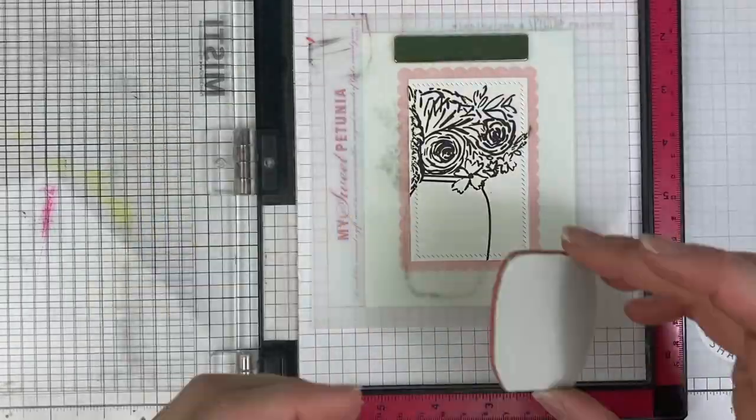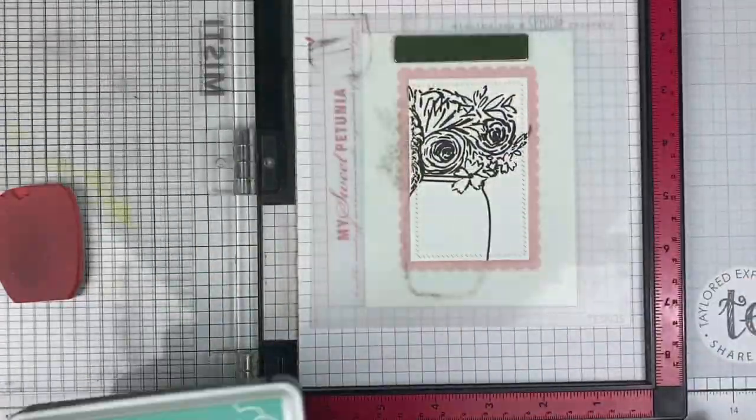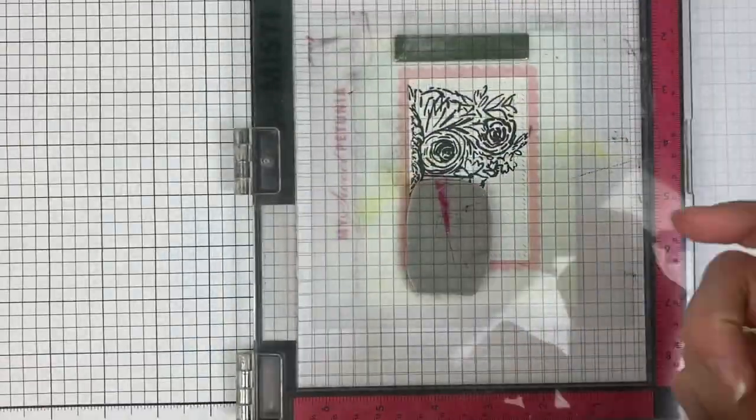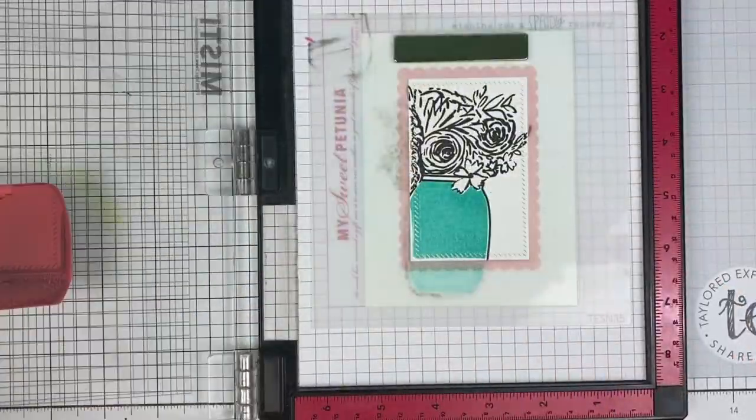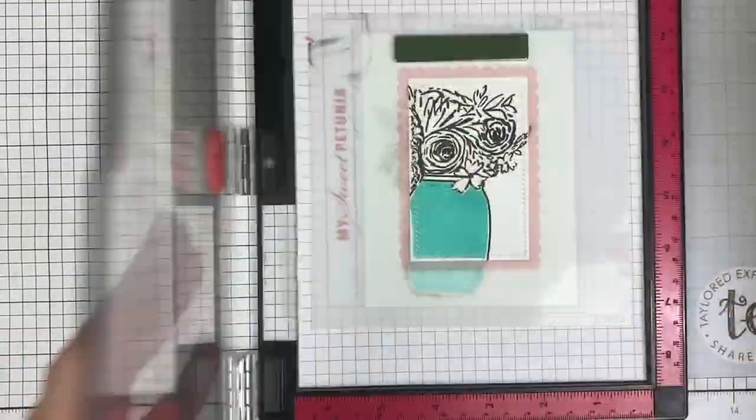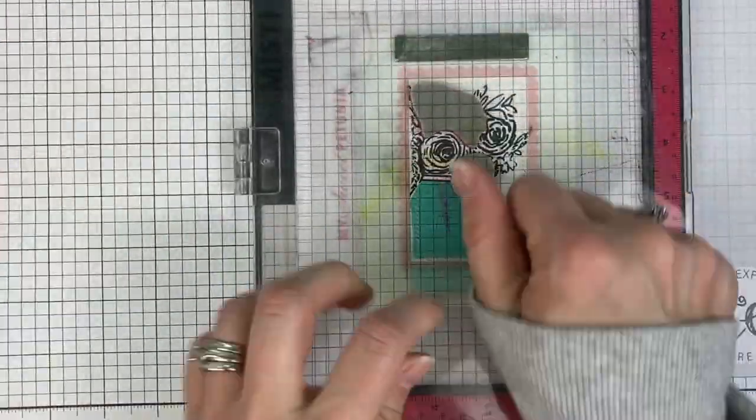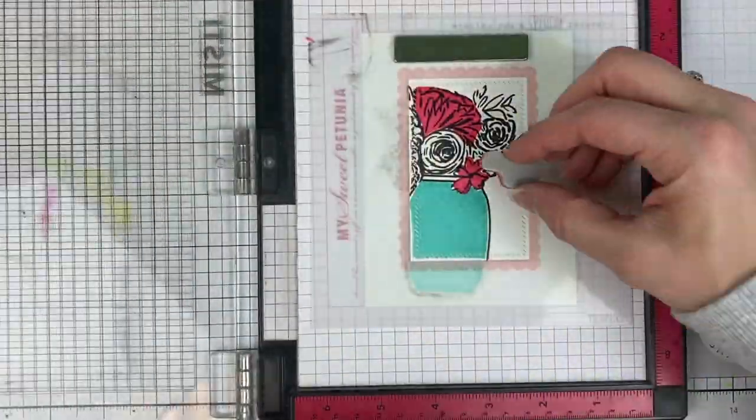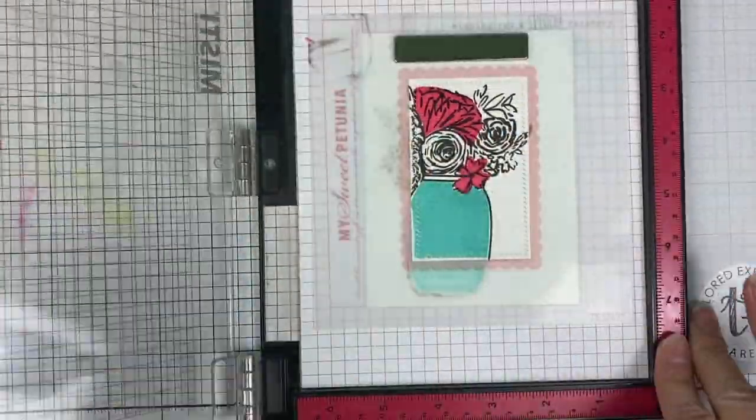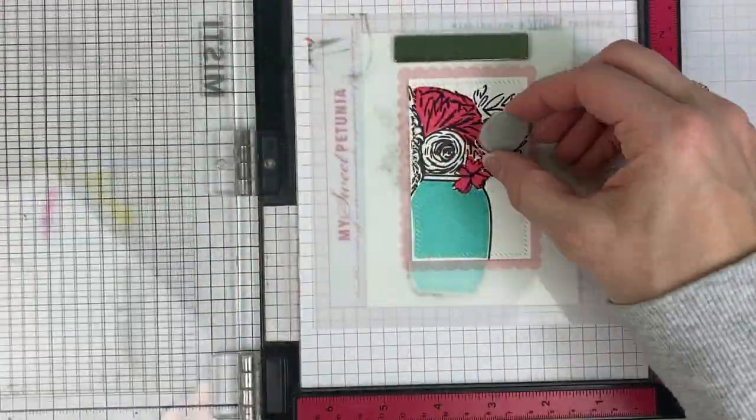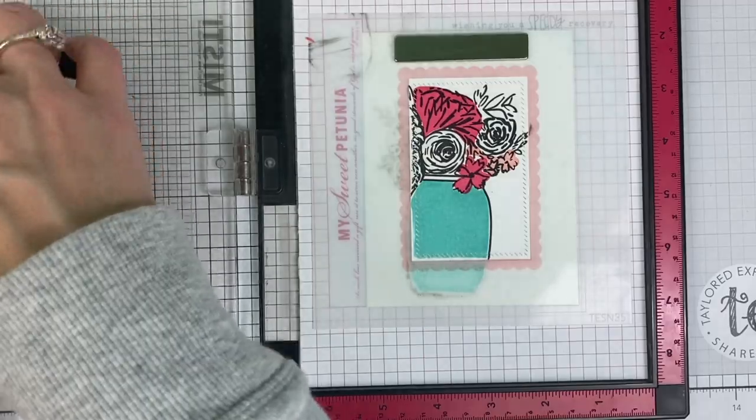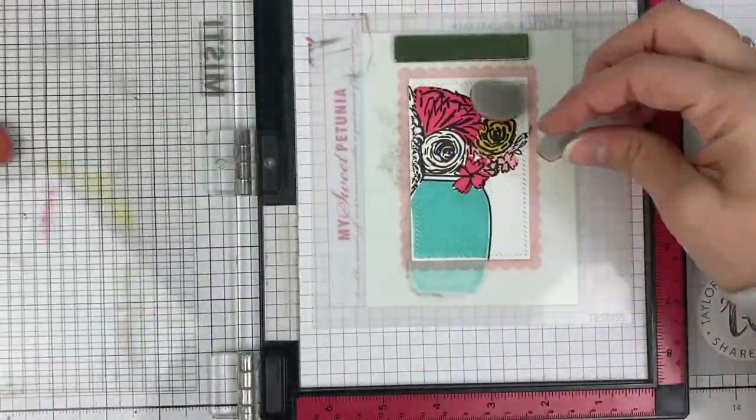Now we're going to do the second bouquet, which is featured inside that scalloped frame, so I've placed my masking stencil around the outside in order to keep my ink off the portions of the card base that I don't want it on. Now I've set up the inside of the vase with the water using Confetti Cake, then Fruit Punch and Pink Champagne Pineapple as well.